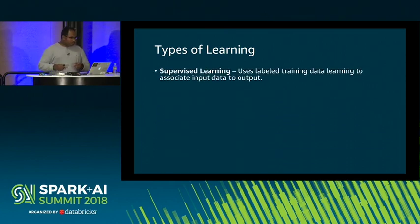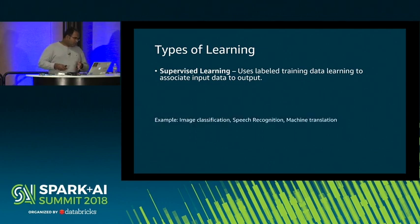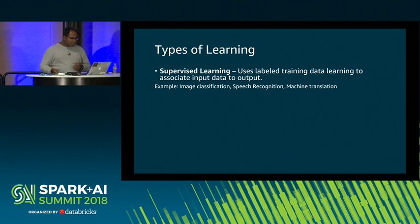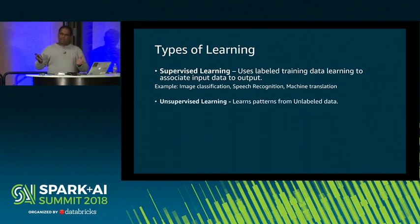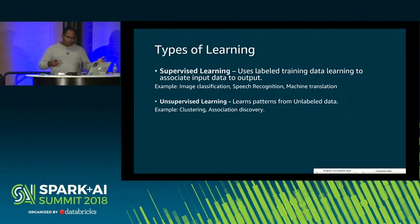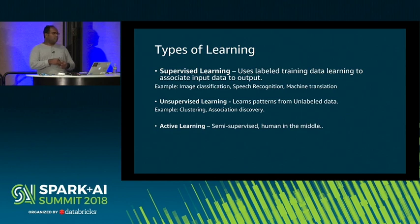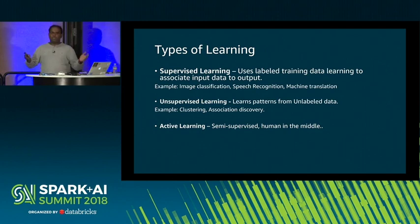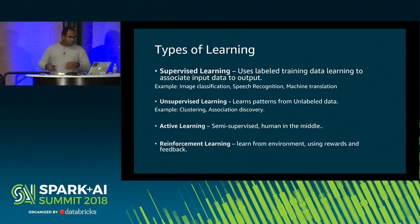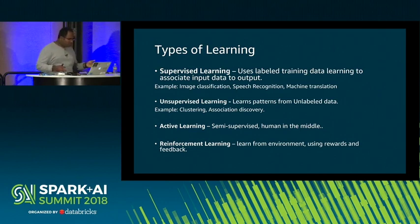Let's look at a few popular types of learning. Supervised learning is where you tell the program the semantic content in your data — applications include image classification, speech recognition, and machine translation. Unsupervised learning tries to learn patterns from unlabeled data — examples include clustering and association discovery. Semi-supervised learning uses a human in the middle: it learns from unlabeled data and queries a user for labels when uncertain. Reinforcement learning is learning from experiences in the current environment using rewards and feedback — examples are in robotics.